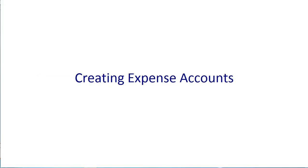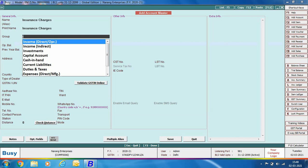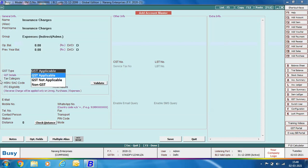Next, we will discuss creating expense accounts. There are numerous expenses a company makes — for example, office stationery, legal expenses, freight expenses, transportation charges. You need to create an expense account for all such types and specify whether GST is applicable on them or not. We'll start with insurance charges — that is, when you've paid an insurance premium. We've given the name as 'Insurance Charges' and the group as Expenses Indirect Administrative.